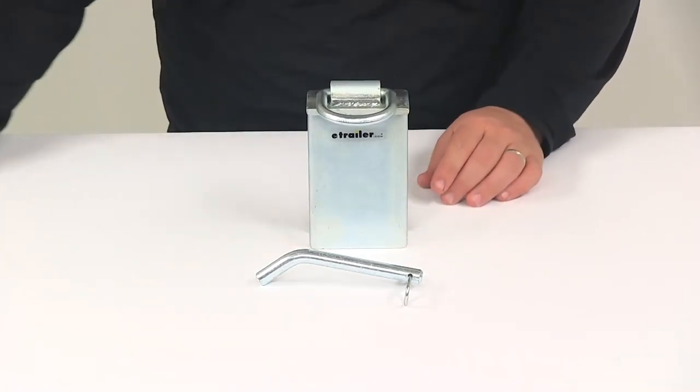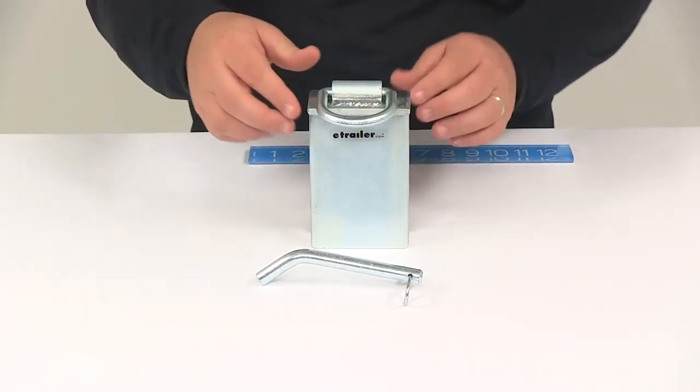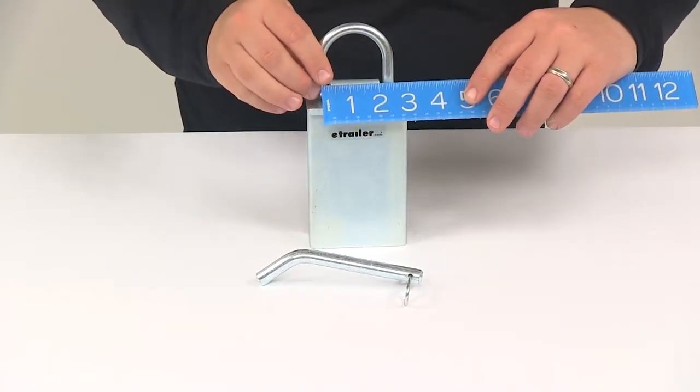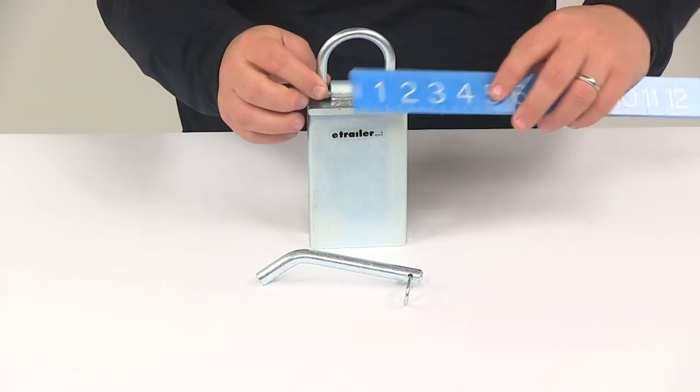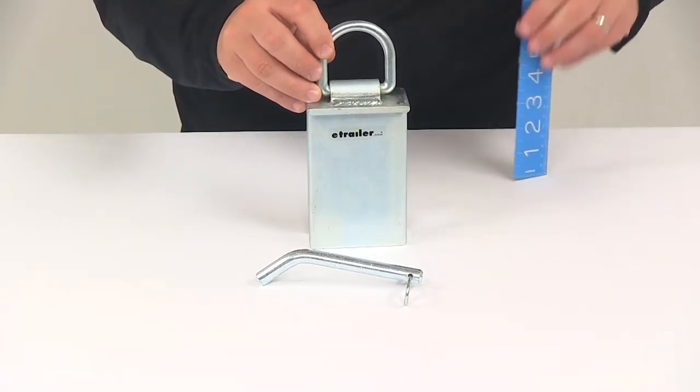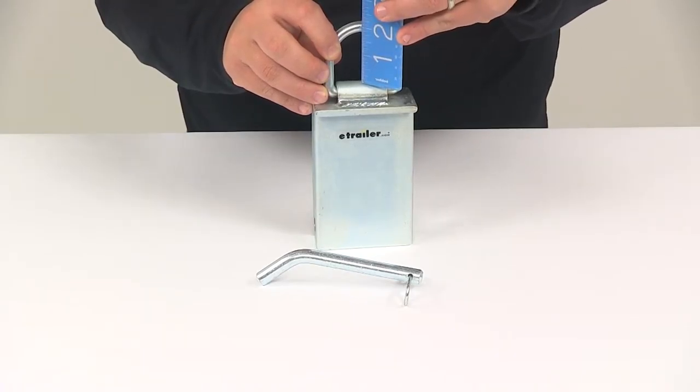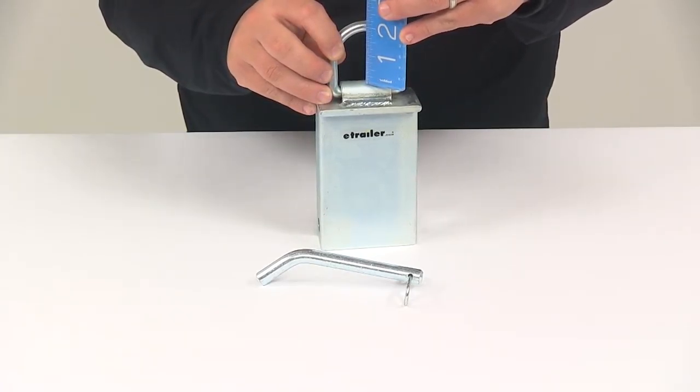A few measurements to go over with you real quick. If we take a measurement of the inner portion here of the D-ring, starting with the width, that's going to give us a usable space of about 2 inches. And then the height, measuring from the top of this collar right here to the bottom portion of the D-ring, that's going to be about 1 and 3 quarters of an inch.